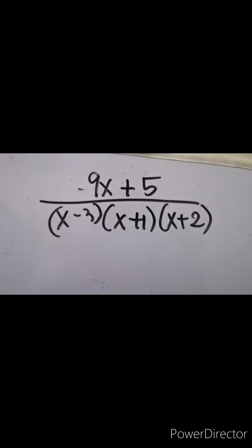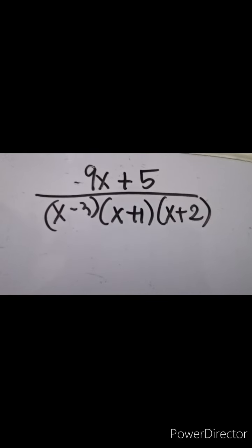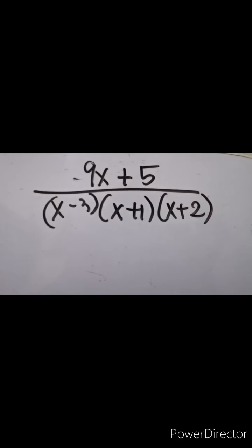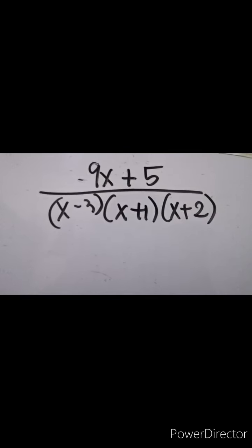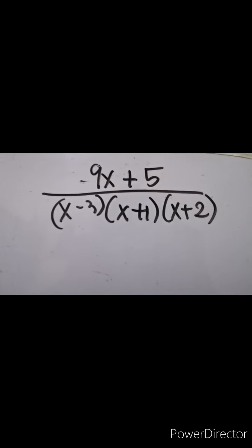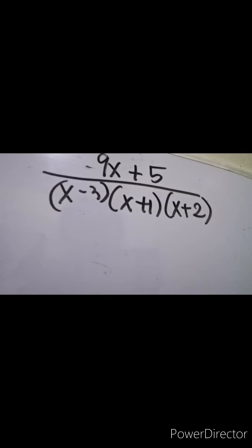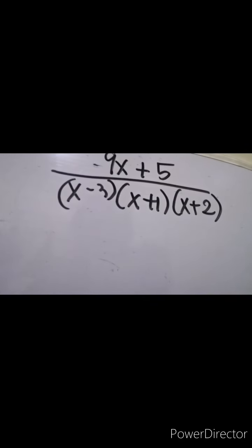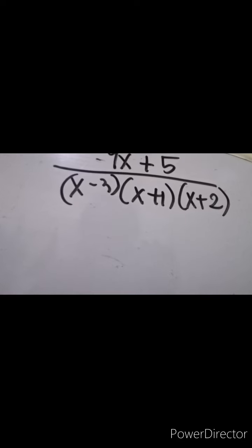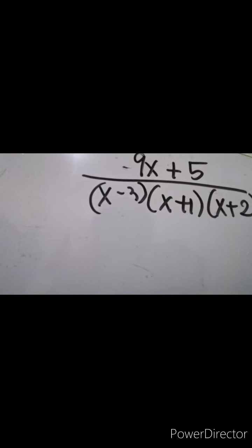Again, when adding or subtracting rational expressions, the first thing to do is to simplify or factor out the denominator. After you factor out the denominator, look for common factors and combine them as the LCD. Then perform the operation of the given rational expression, as we did in the examples.